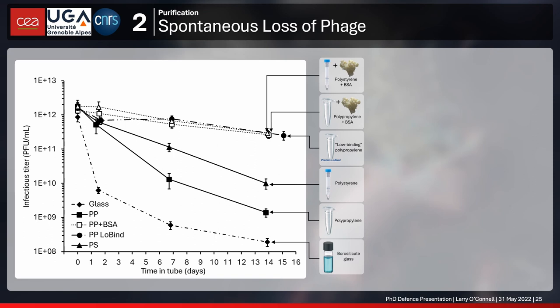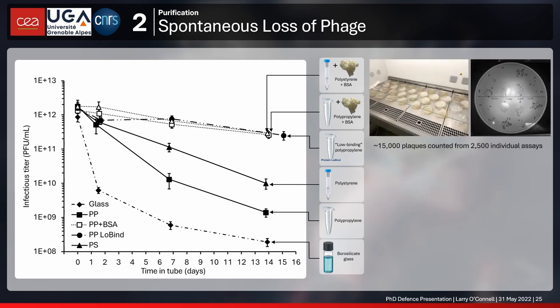I decided to do this two weeks before the end of my PhD — not the best time to start a new experiment. It took about 2,500 individual drop-cast assays, measuring the concentration of bacteriophages repeatedly over two weeks and tracking how they evolved. That involved counting about 15,000 individual phage plaques.